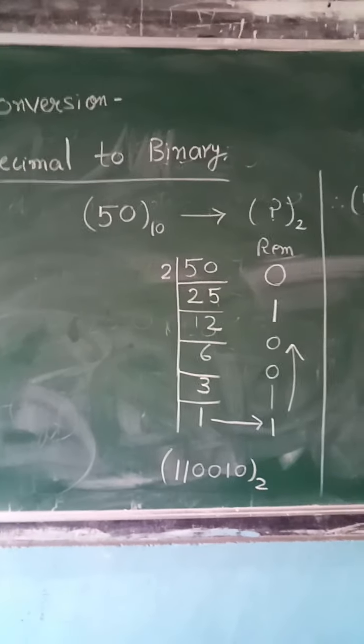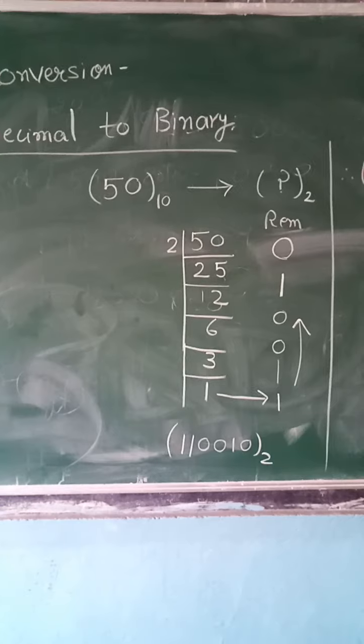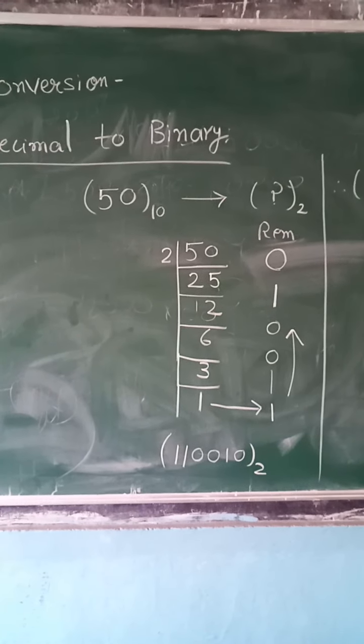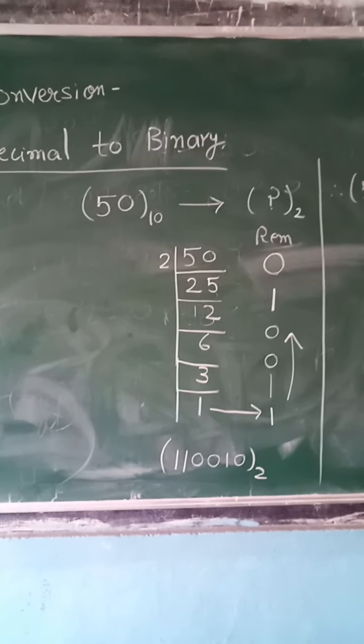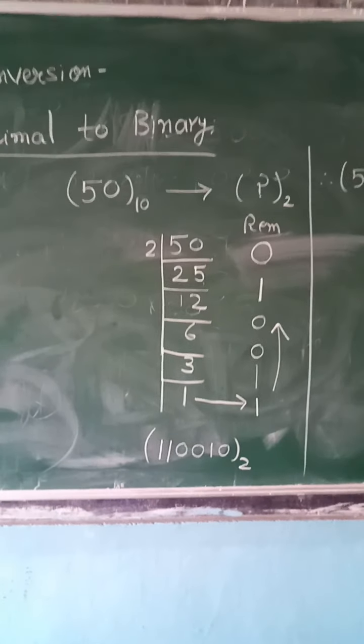We will write all this remainder on the side and then last you will get 1. 1 is not divisible by 2, so it is written directly after all the remainders.